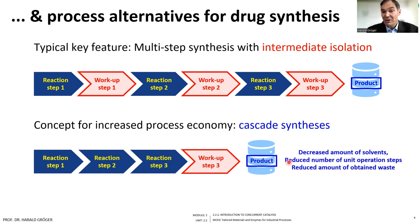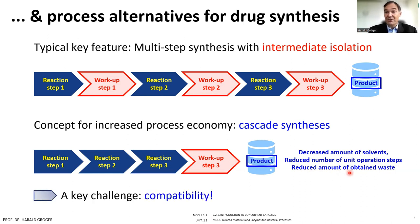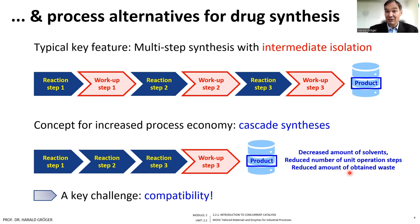This approach would lead to a decreased amount of solvents, a reduced number of unit operation steps, and a reduced amount of resulting waste. Coming back to the challenges in this field: if you would like to combine reactions, the catalyst from the second reaction must be tolerant to the catalyst from the first one, which is still in the reaction solution. In more general terms, compatibility is necessary — the components must be somehow compatible with each other, at least to a certain extent. This is certainly one of the key challenges in setting up cascade processes.